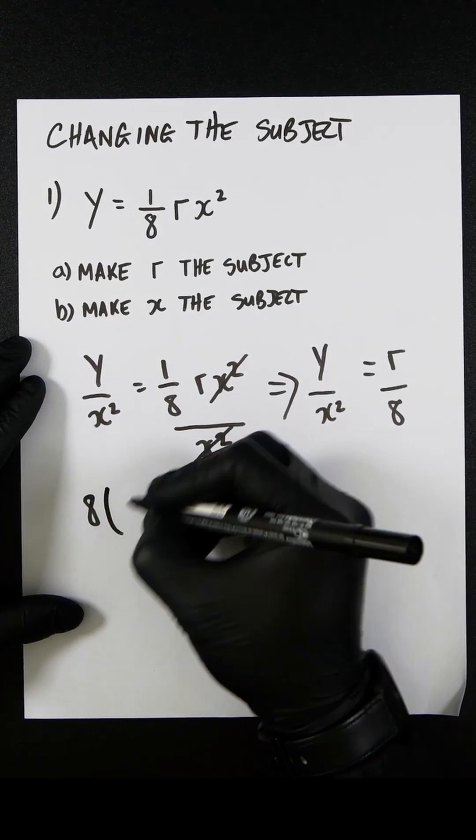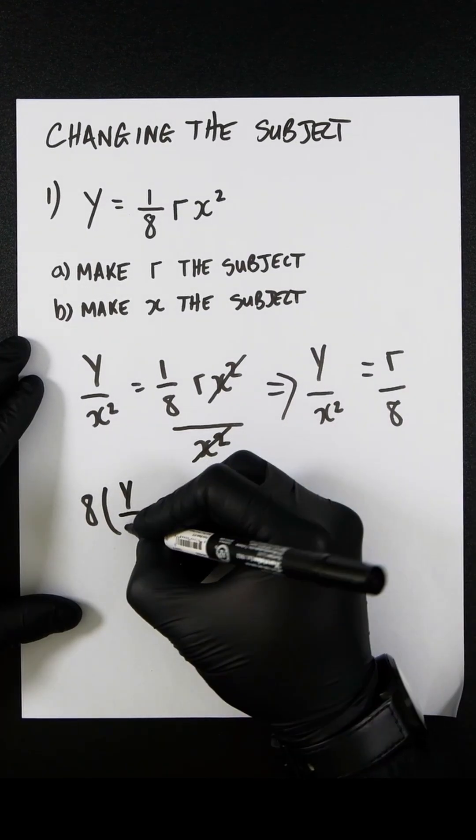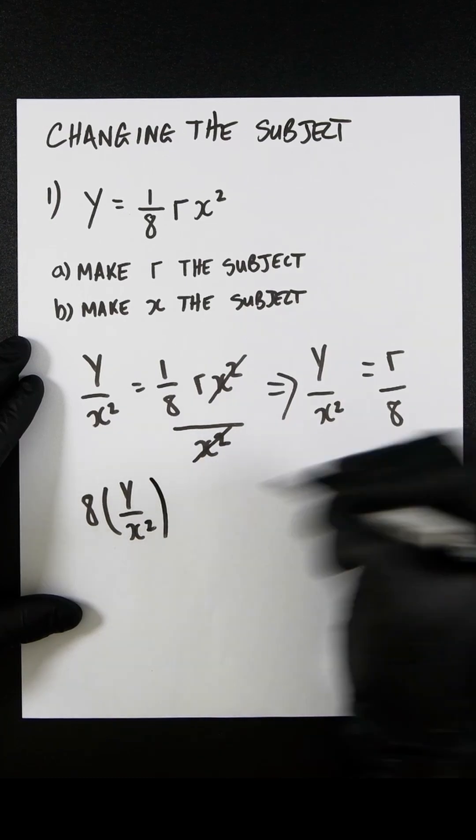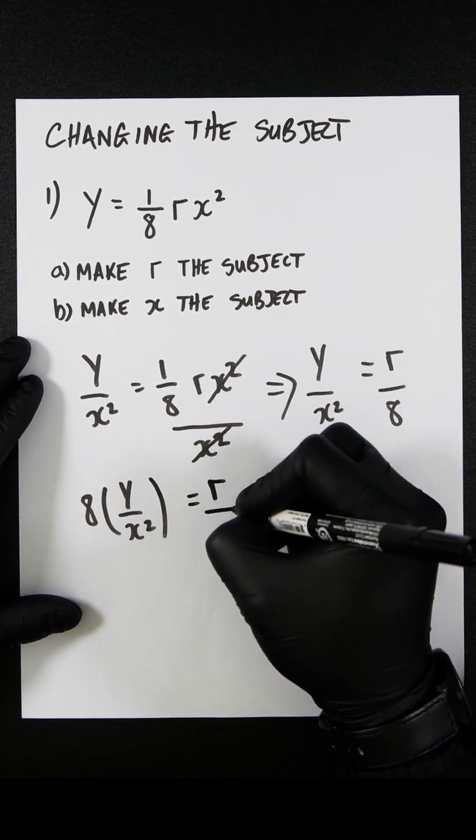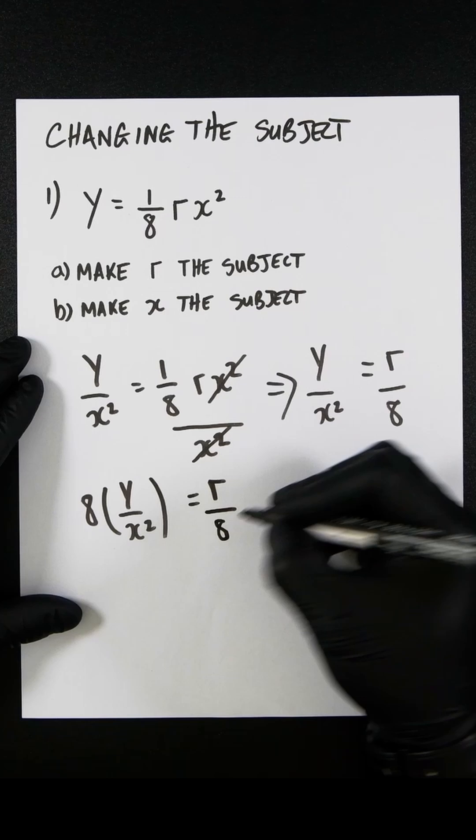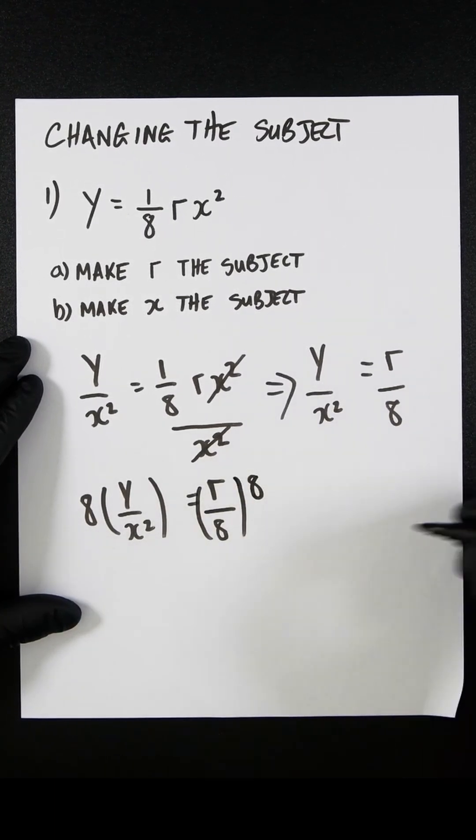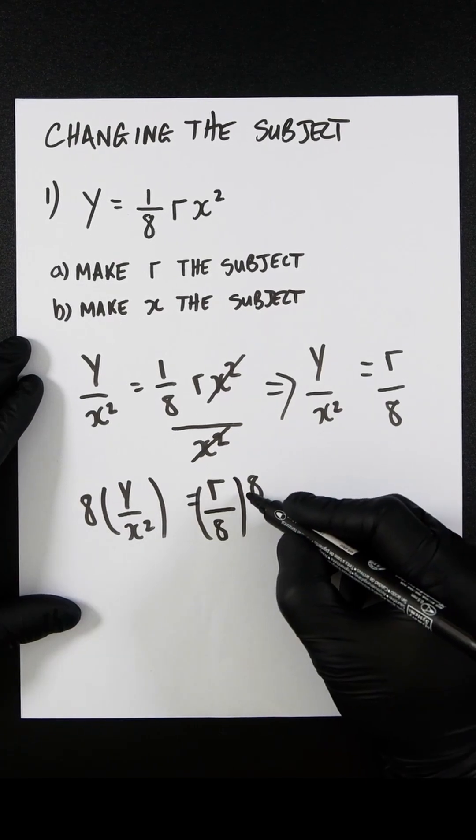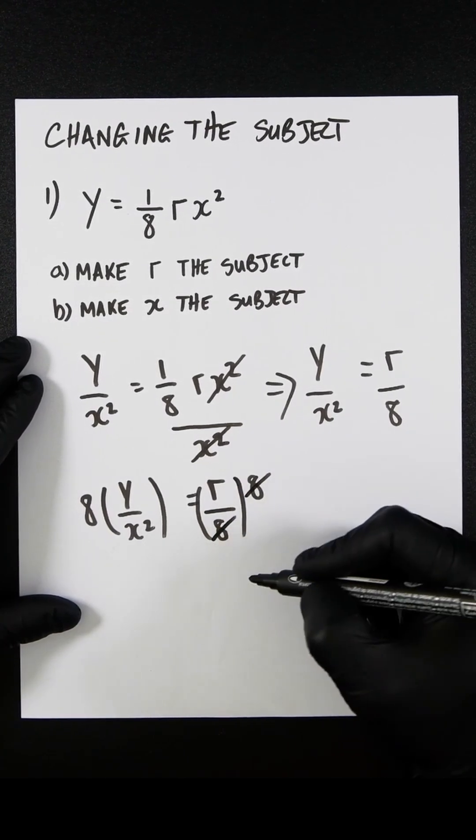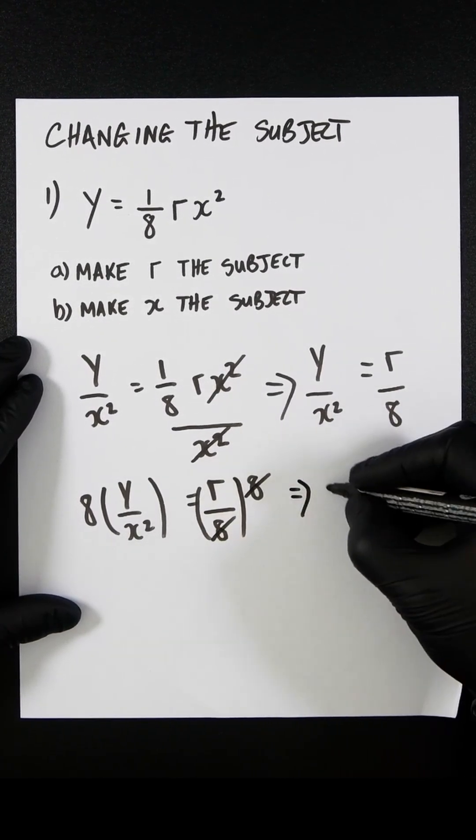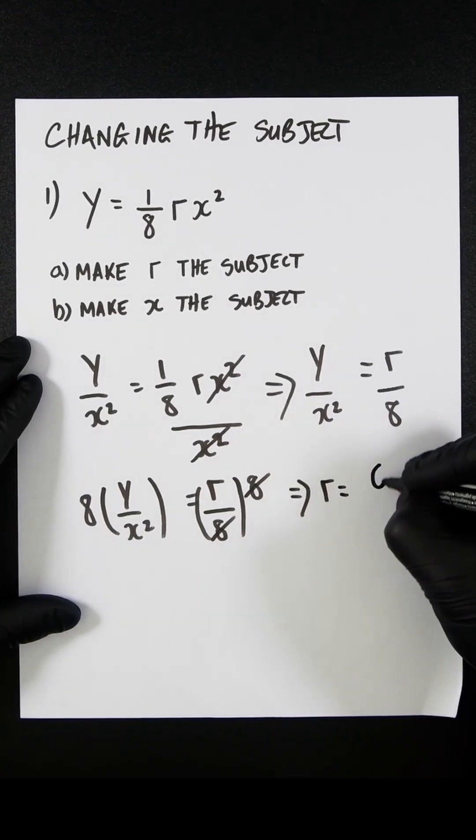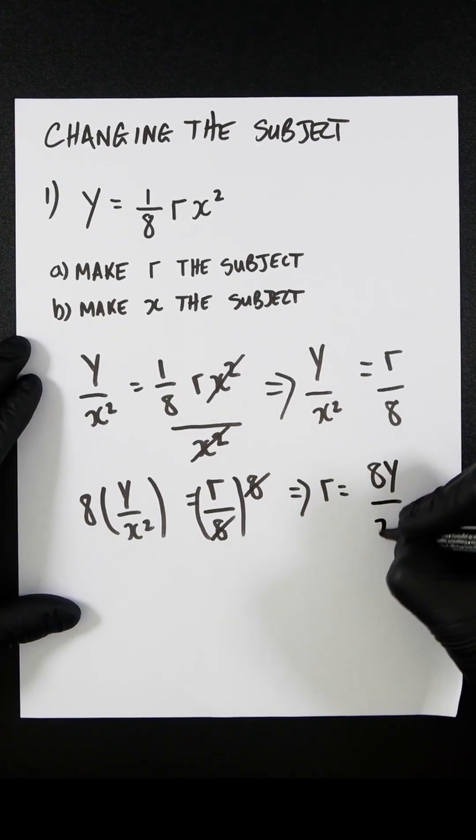You're going to get 8y over x squared, which equals r over 8. The 8 here will cancel out,